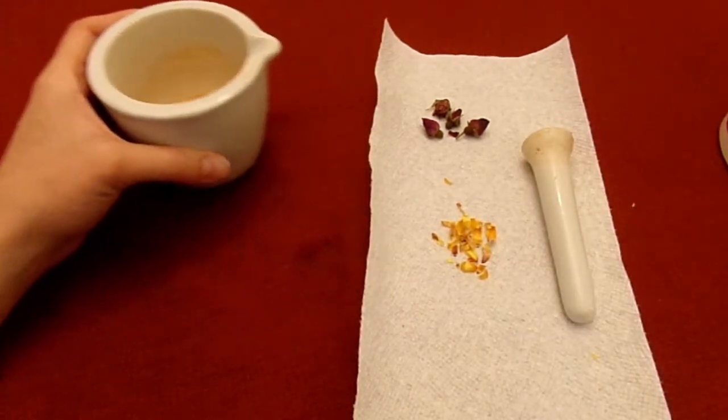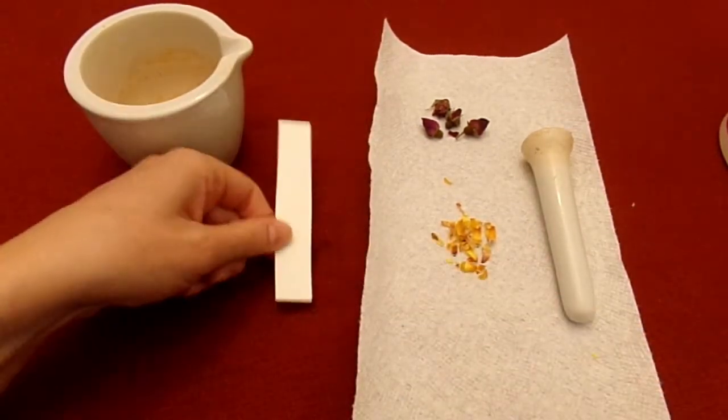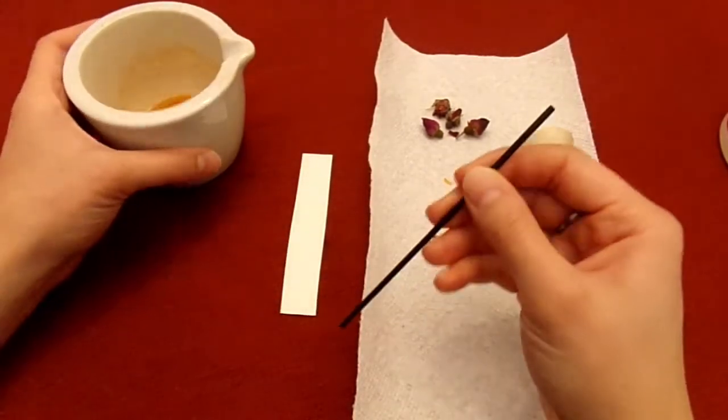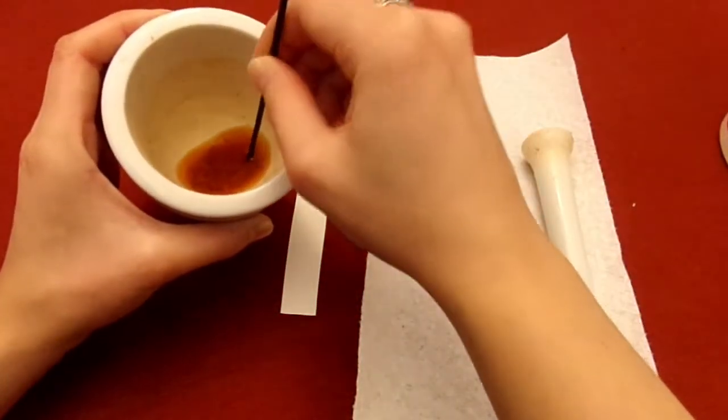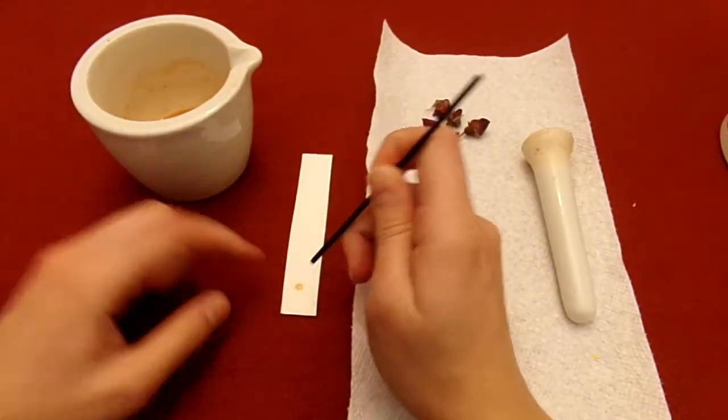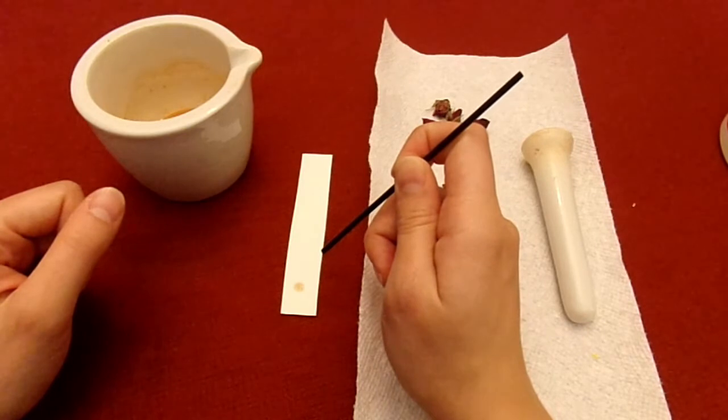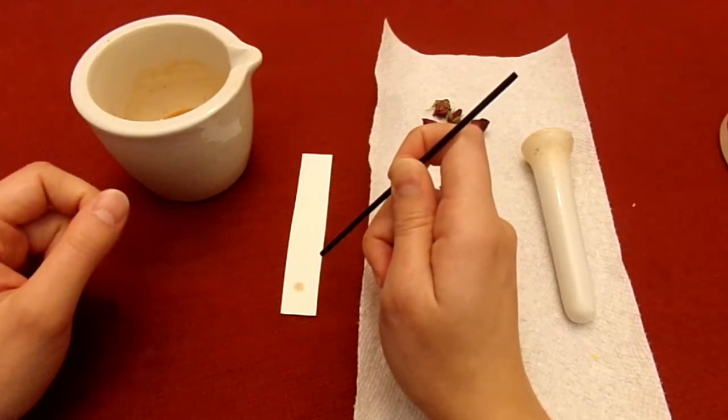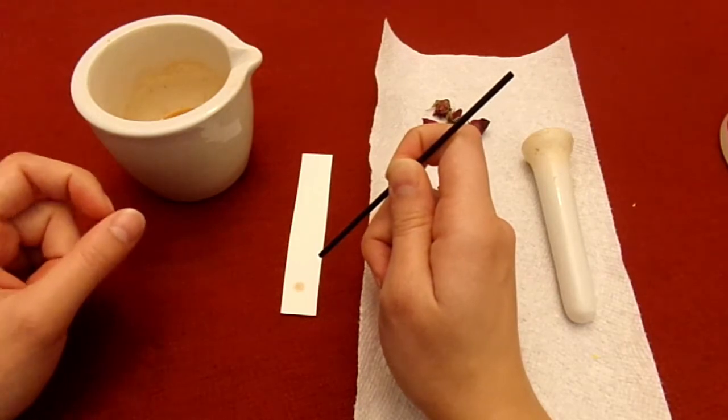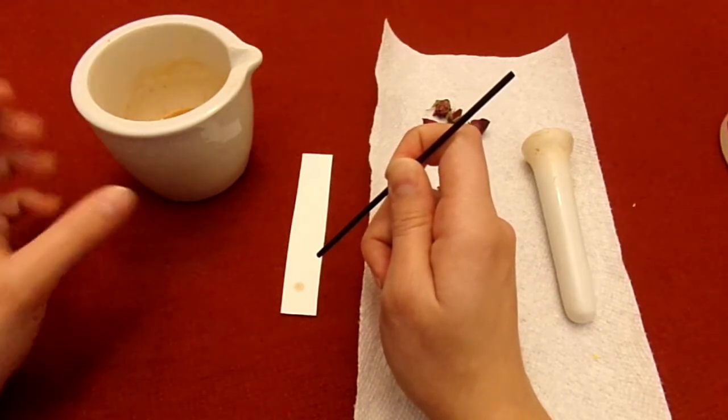Next you're going to take one of your paper strips and one of your spotting straws and pull up some of the liquid and spot it about half an inch from the bottom of the paper. If the color doesn't look very bright, let it dry, and then spot it again. And repeat until you have a nice bright spot.